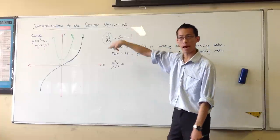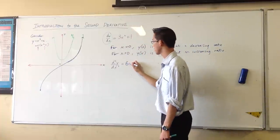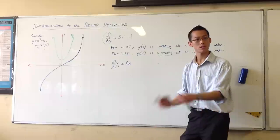So 3x², bring the power down, and you reduce it by 1, so you just get 6x. And the 1, of course, it's a constant, so it vanishes.